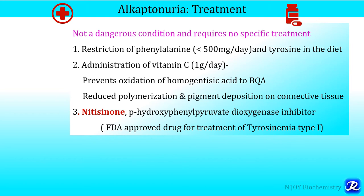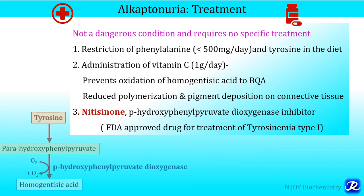Nitisinone is a parahydroxyphenylpyruvate dioxygenase inhibitor. This enzyme is responsible for conversion of parahydroxyphenylpyruvate to homogentisic acid. Nitisinone blocks this enzyme, so the conversion to homogentisic acid is inhibited, leading to decreased homogentisic acid and increased excretion of parahydroxyphenylpyruvate in urine. This minimizes the deleterious effects of homogentisic acid on the body.